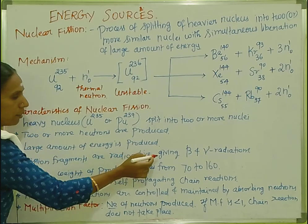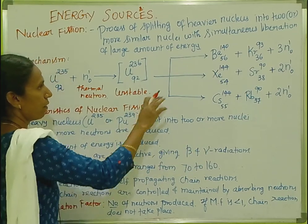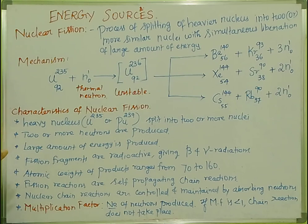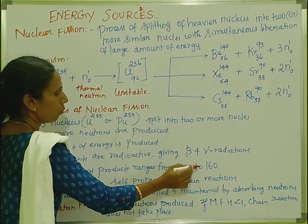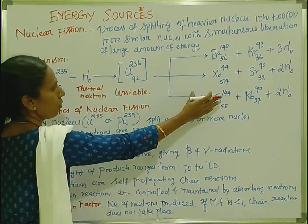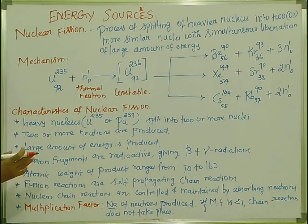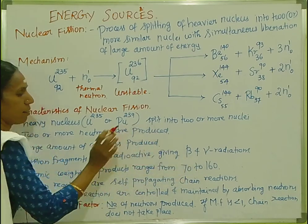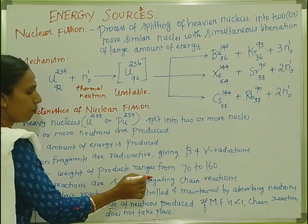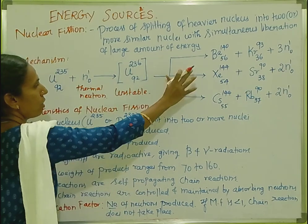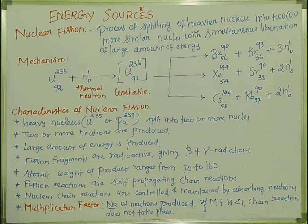Fourth: fission fragments are radioactive, giving beta and gamma radiations. Fifth: the atomic weight of products ranges from 17 to 161. Sixth: fission reactions are self-propagating chain reactions — this reaction is a chain reaction.